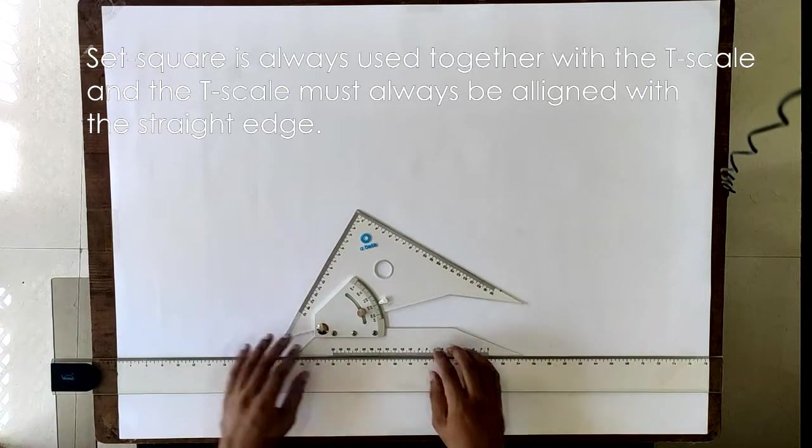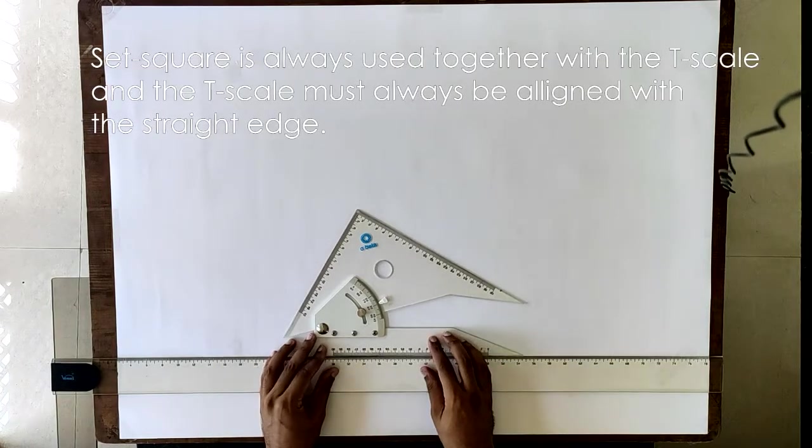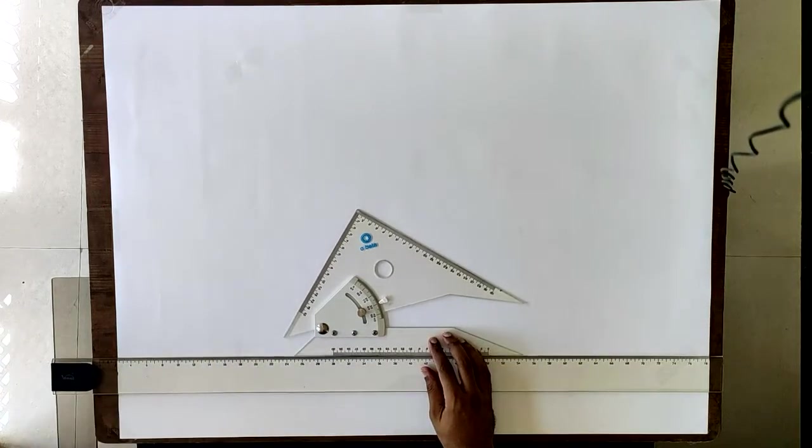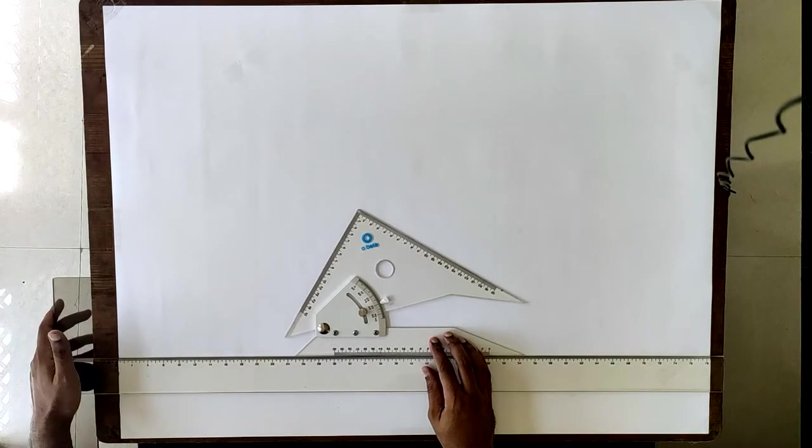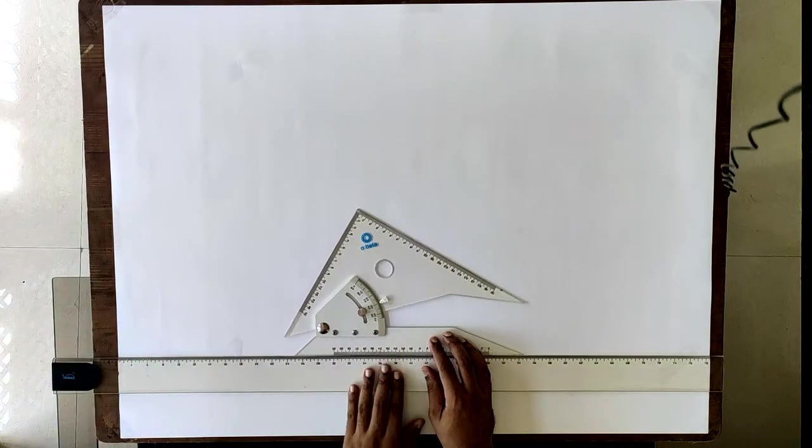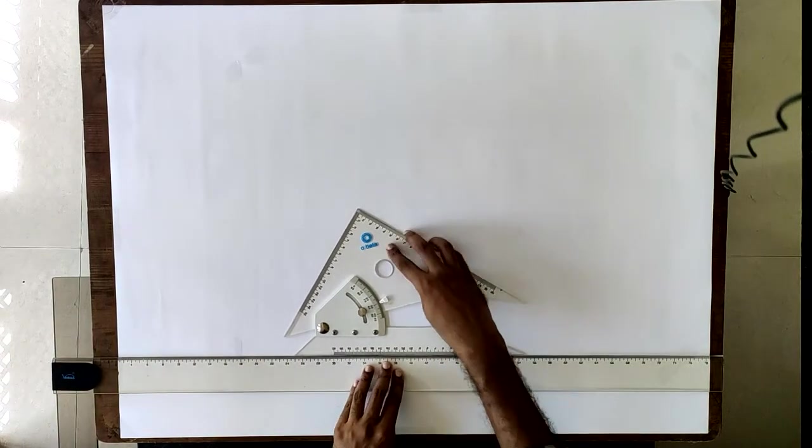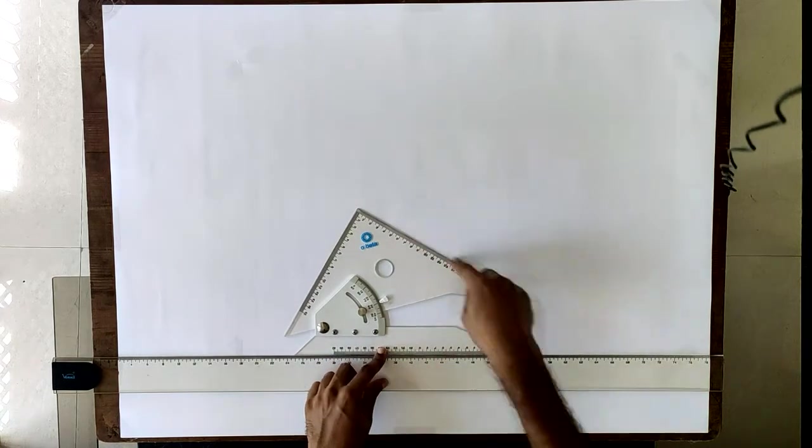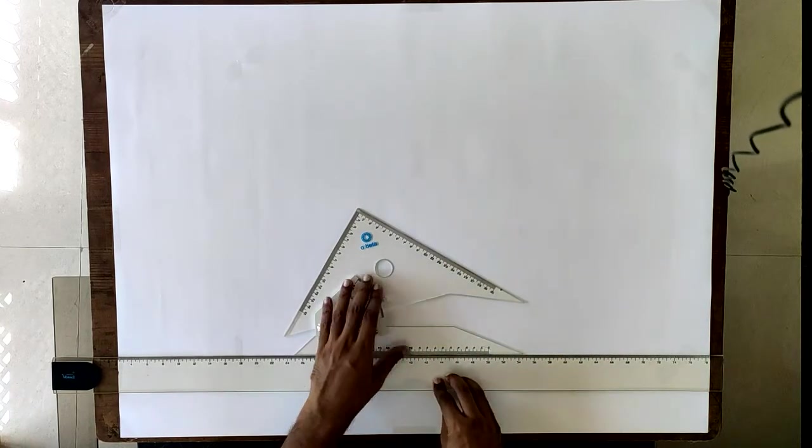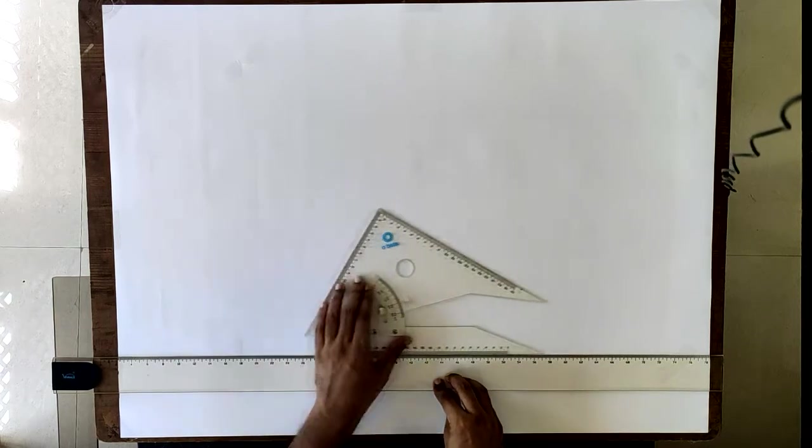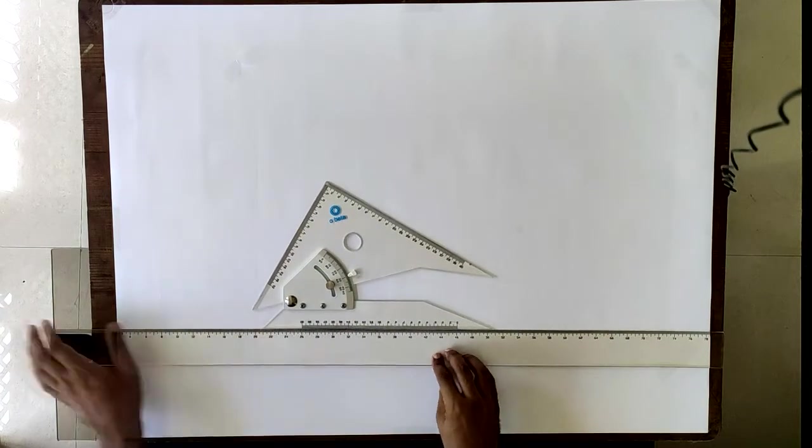This is important for accuracy. You always have to keep your hand here, make sure that it is properly aligned. Place one hand on the T-scale, keep the set square aligned with the T-scale, and then draw the lines. You can draw any set of parallel lines by moving the set square or the T-scale.